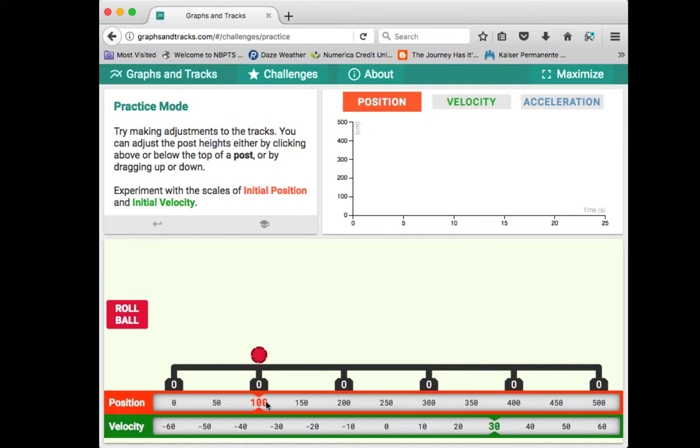The initial velocity of the ball can be set by clicking on the velocity indicator. Right is positive, left is negative. If you set the ball at a position of 100 meters and give it a positive velocity of 10 meters per second and click roll ball, you'll see the position graph produces a linear graph, just like you'd expect for an object moving with constant velocity.